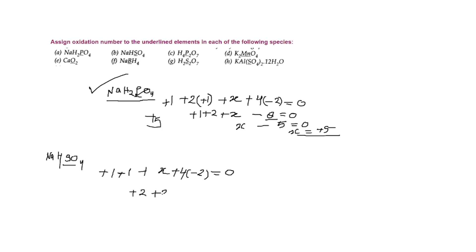So this becomes: plus two plus x minus eight equals zero. Then x minus six equals zero, so x equals plus six. This means the oxidation state of sulfur here is plus six.